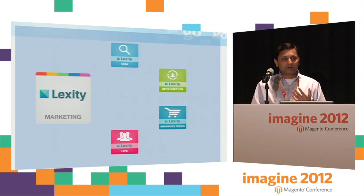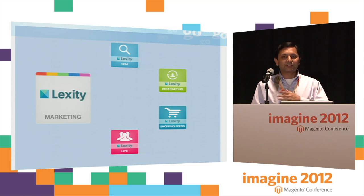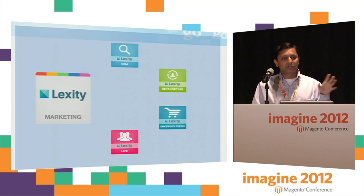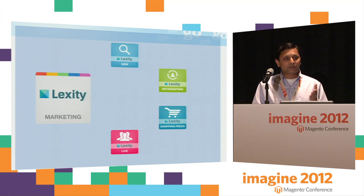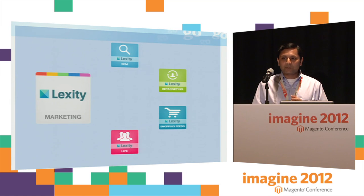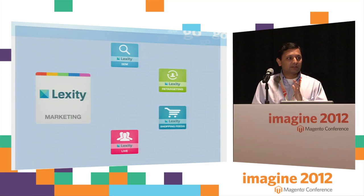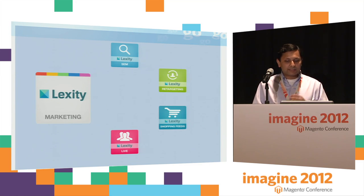We also do retargeting — a one-click retargeting solution. You install the extension, it drops all the pixels and configuration. Set a budget and we'll take care of the campaigns. We automatically create ads based on your product catalog, pulling in the product images and prices — because we have all of that through the fabric — and then run them within a day. Same thing with shopping feeds: we submit feeds, getting the product inventory and submitting to various marketplaces.